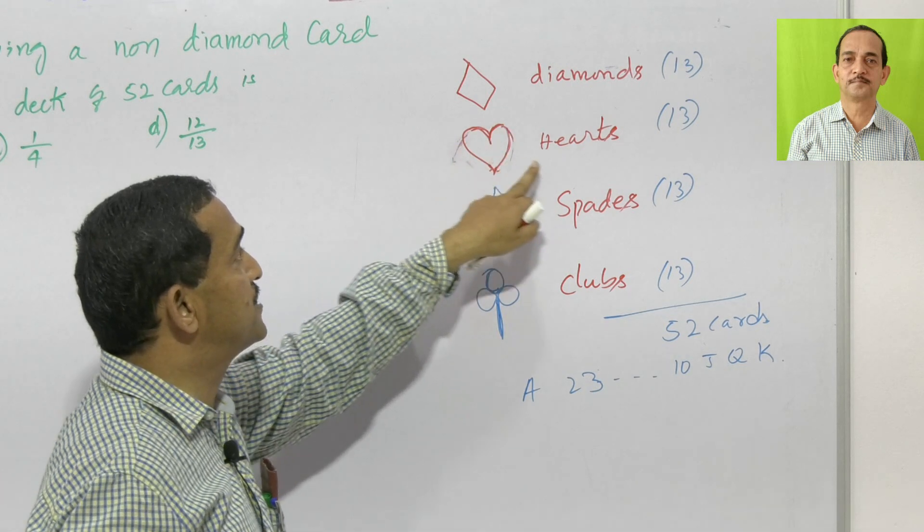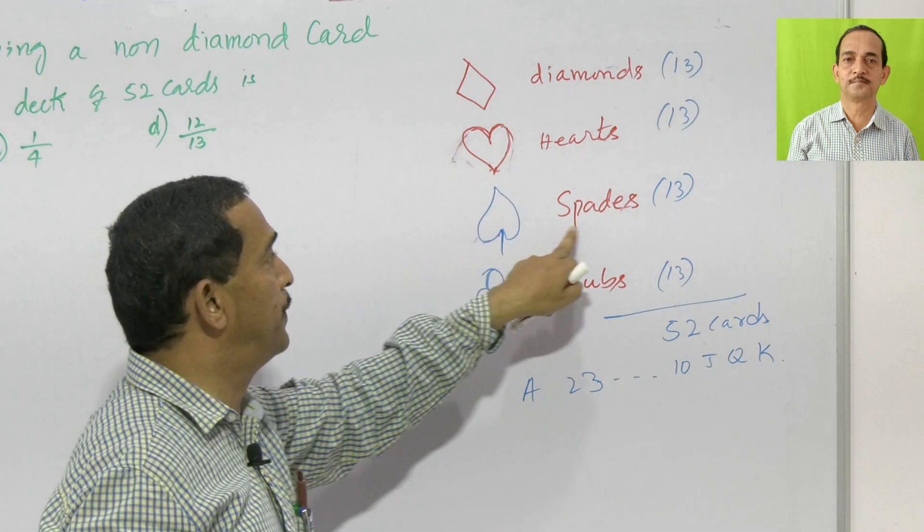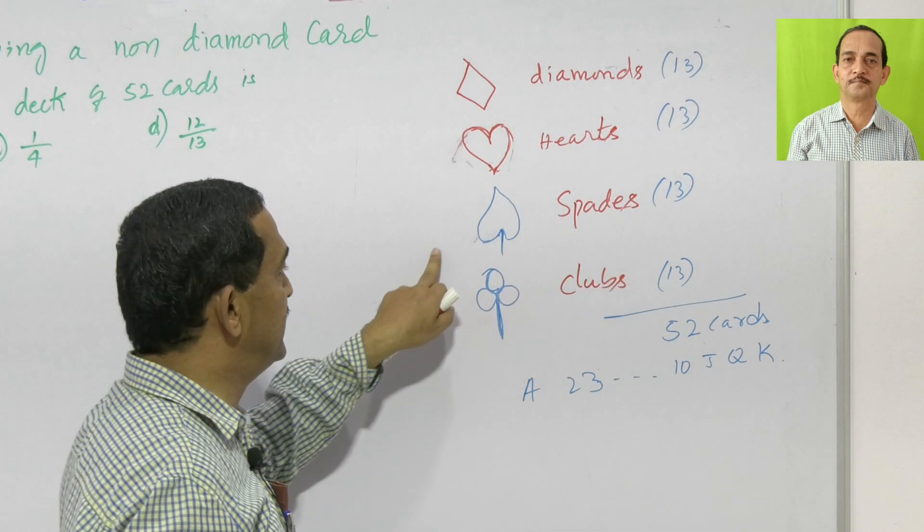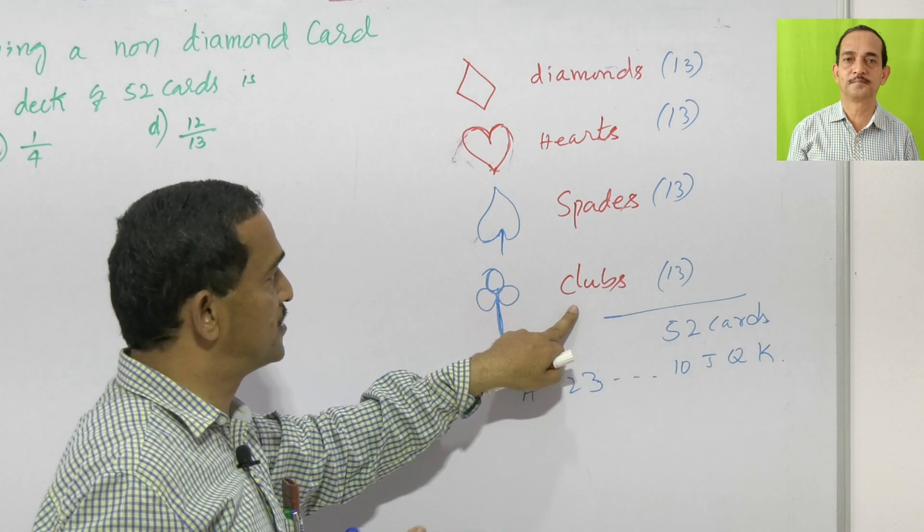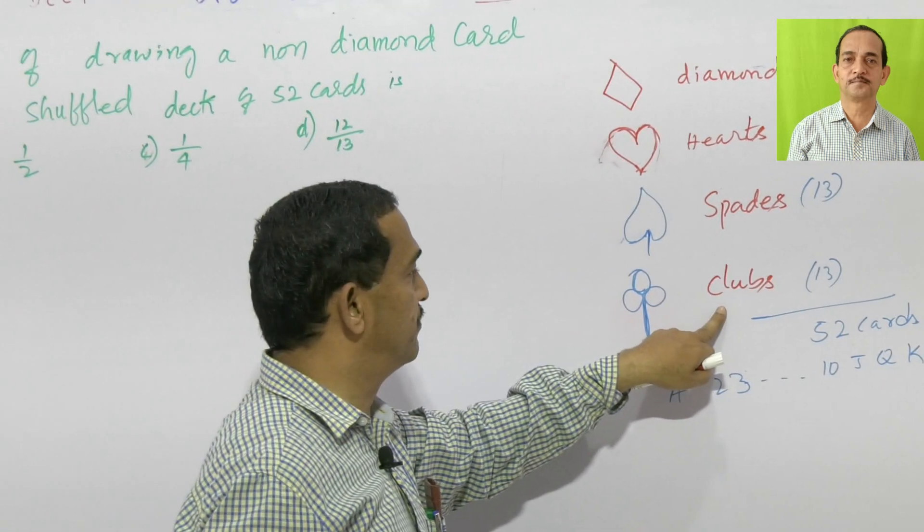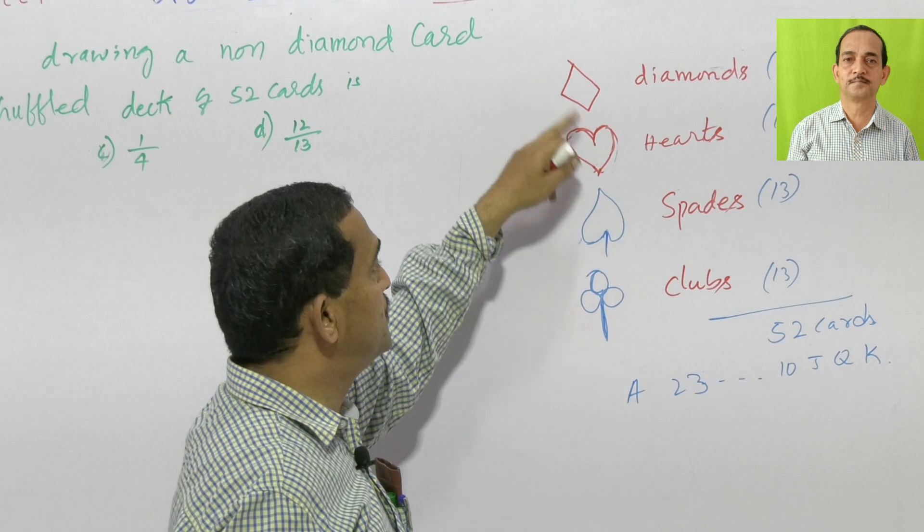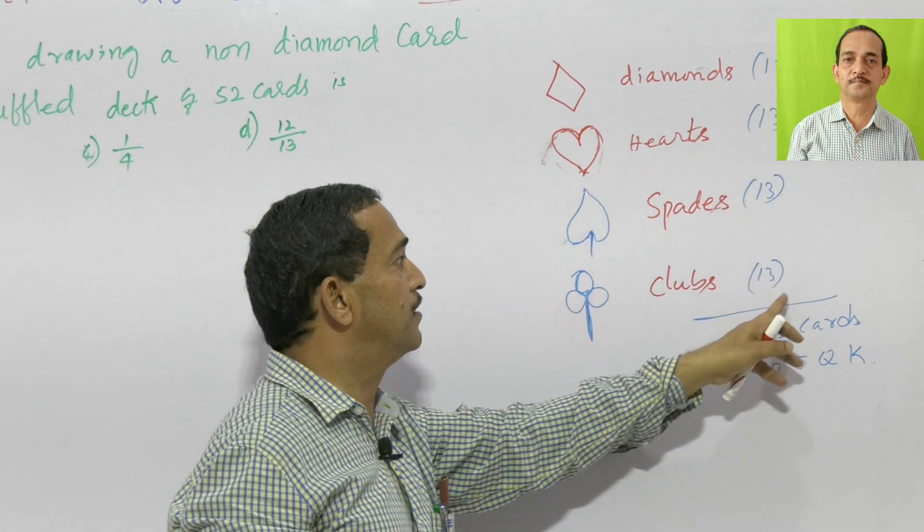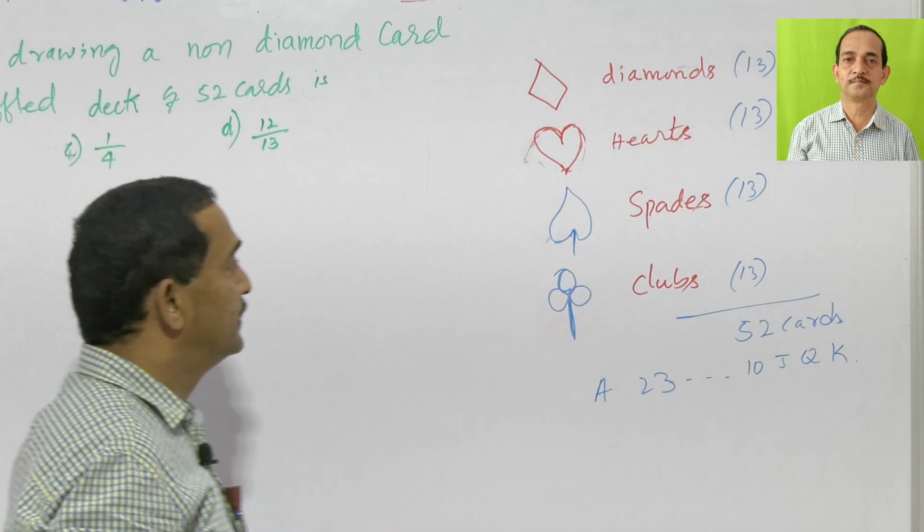One is diamond shape, another is called heart shape, another one is spade, we call this the spade shape and another one is clubs, also called kalwara in other language. So now out of these 4 shapes, each shape has 13 cards, that is 52 cards.